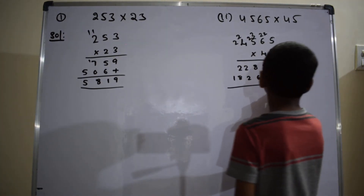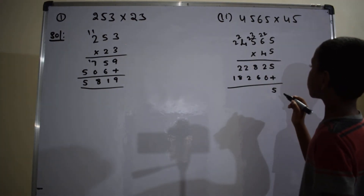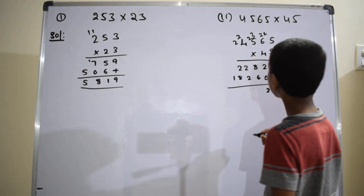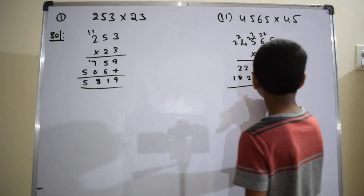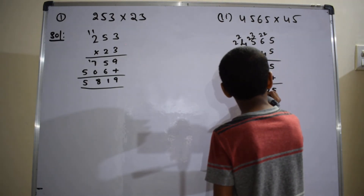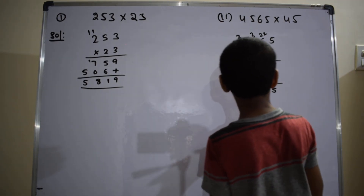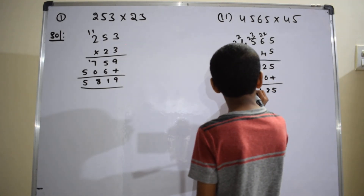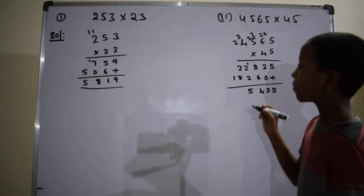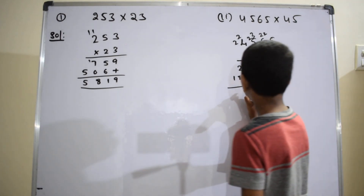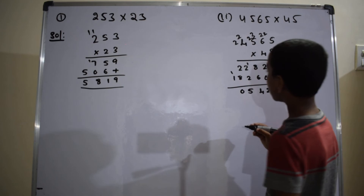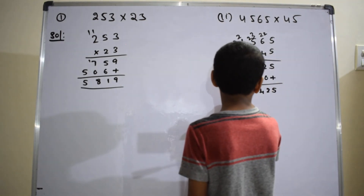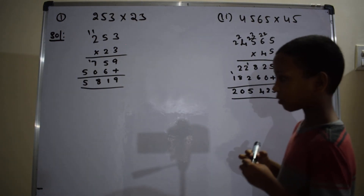Here equals to 5. 2 plus 0 equals to 2. 8 plus 6 equals to 14. 2 plus 3 equals to 4, 4 plus 1 equals to 5. 8 plus 2 equals to 10, right here 0, 1 is carried. 1 plus 1 equals to 2. The answer is equal to 205435.